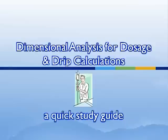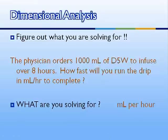Hi, this is Professor Vimenko, and I'm going to go over a quick PowerPoint with you to talk about dimensional analysis to use for dosage and drip calculations. The physician orders 1,000 milliliters of D5W to infuse over eight hours. How fast will you run the drip in milliliters per hour to complete?